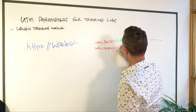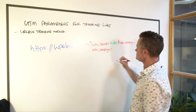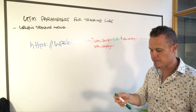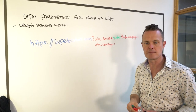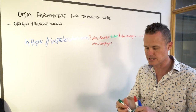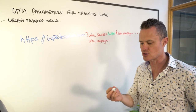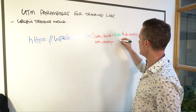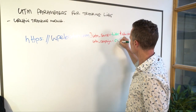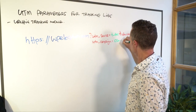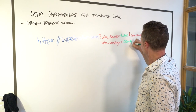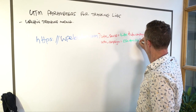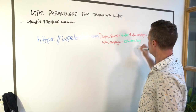Campaign is the thing that we're promoting. So at the moment we're promoting the content strategy blueprint blog post, so in that case I might put CSB underscore epic underscore blog.